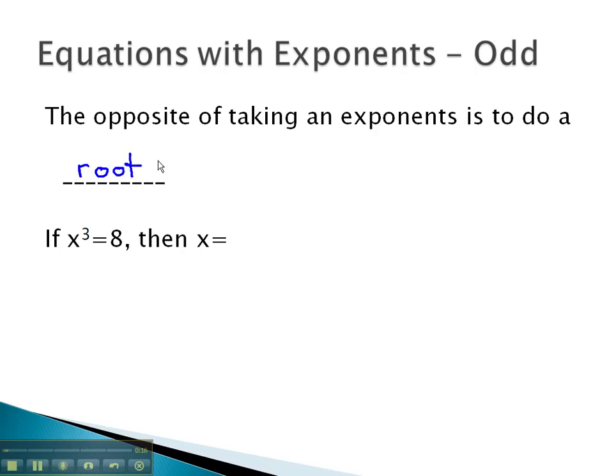With odd exponents, we can simply take this root to solve the equation. If x cubed equals 8, we would take the third root, which is the opposite of a third power, on both sides. The cube root of 8 is 2, so x must equal 2.